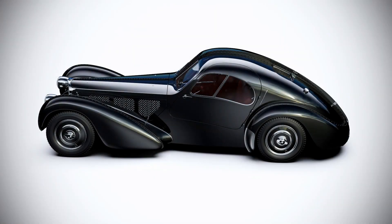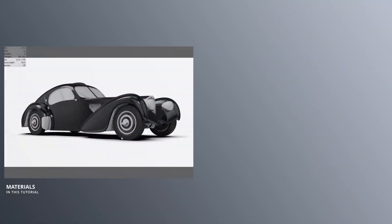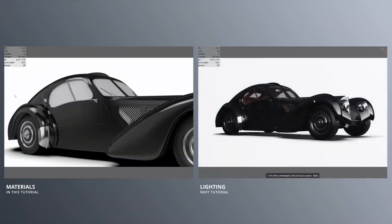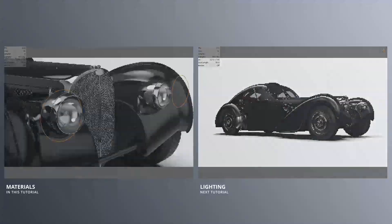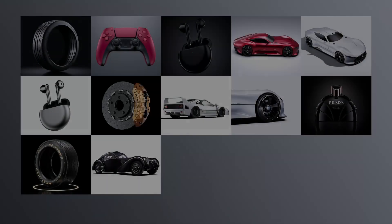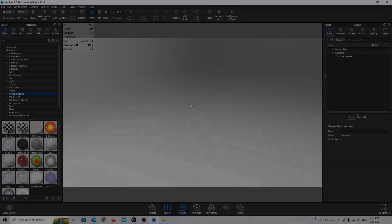Hello guys! In this tutorial I'm going to show you how to create automotive visualization like this in Keyshot. In the first part we are going to create materials and in the second part we are going to create lighting. If you want to download this 3D model, visit my Patreon page — link is in the description. So let's render.